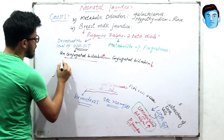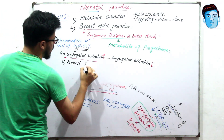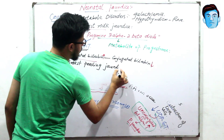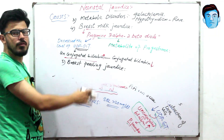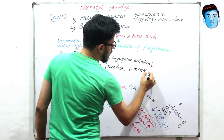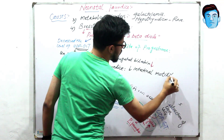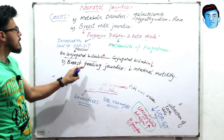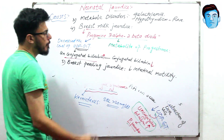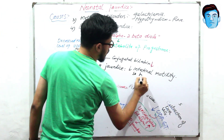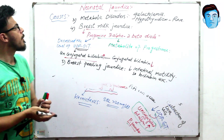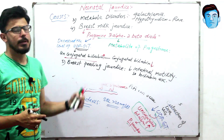Another cause is breastfeeding jaundice. In breastfeeding jaundice, it is due to insufficient breastfeeding, which leads to decreased intestinal motility. So bilirubin excretion does not occur. These are all the important and main causes of pathological jaundice.